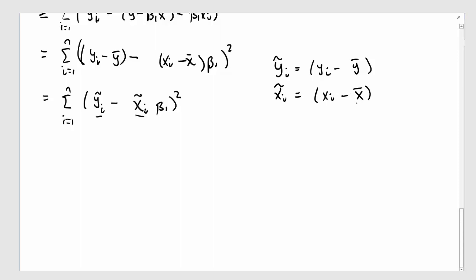Well, we know what the least squares estimate for this equation is. The beta 1 hat has to be summation yi tilde times xi tilde divided by summation xi tilde squared.